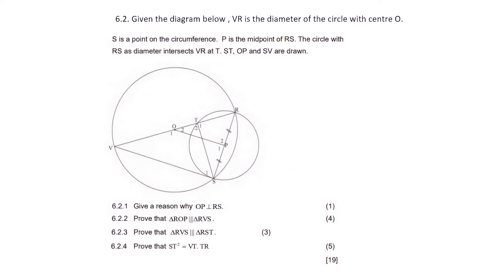This is question 6.2. We're given a circle. They tell us that VR is the diameter. P is the midpoint, and RS is the diameter of the smaller circle. So for 6.2.1, we need to give a reason why OP is perpendicular to RS.